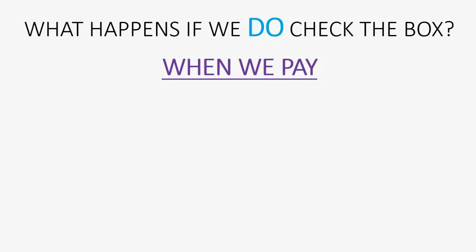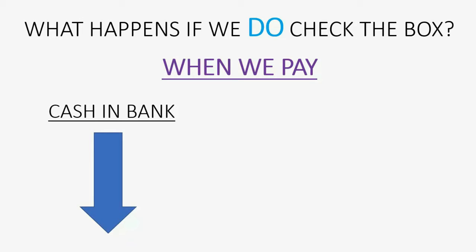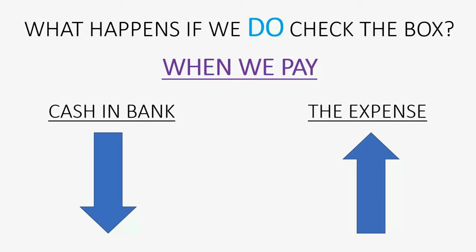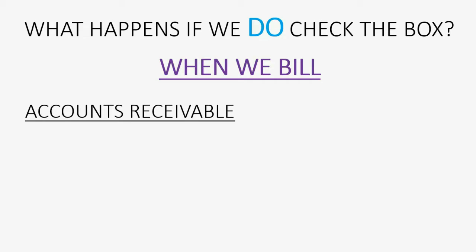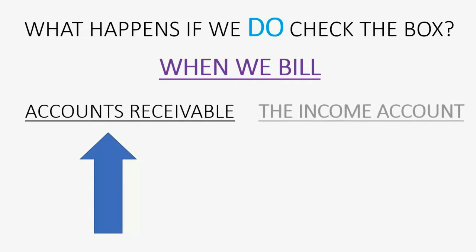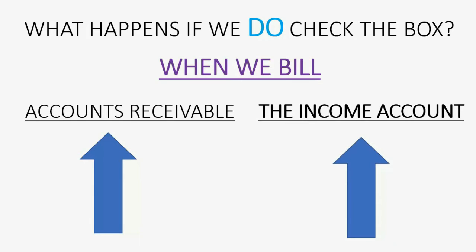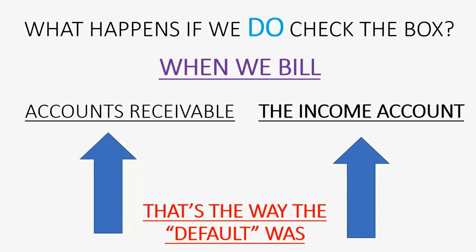So what happens when the check mark is there? At the moment that we pay a billable expense, cash goes down. Of course, at the moment we pay for an expense, the expense goes up and QuickBooks records it as our expense for now. At the moment we bill the client, accounts receivable goes up because the client owes us more, but the income account that relates to that billable expense will also go up — instead of the expense going down, the income account goes up. That's the way it was set by default.